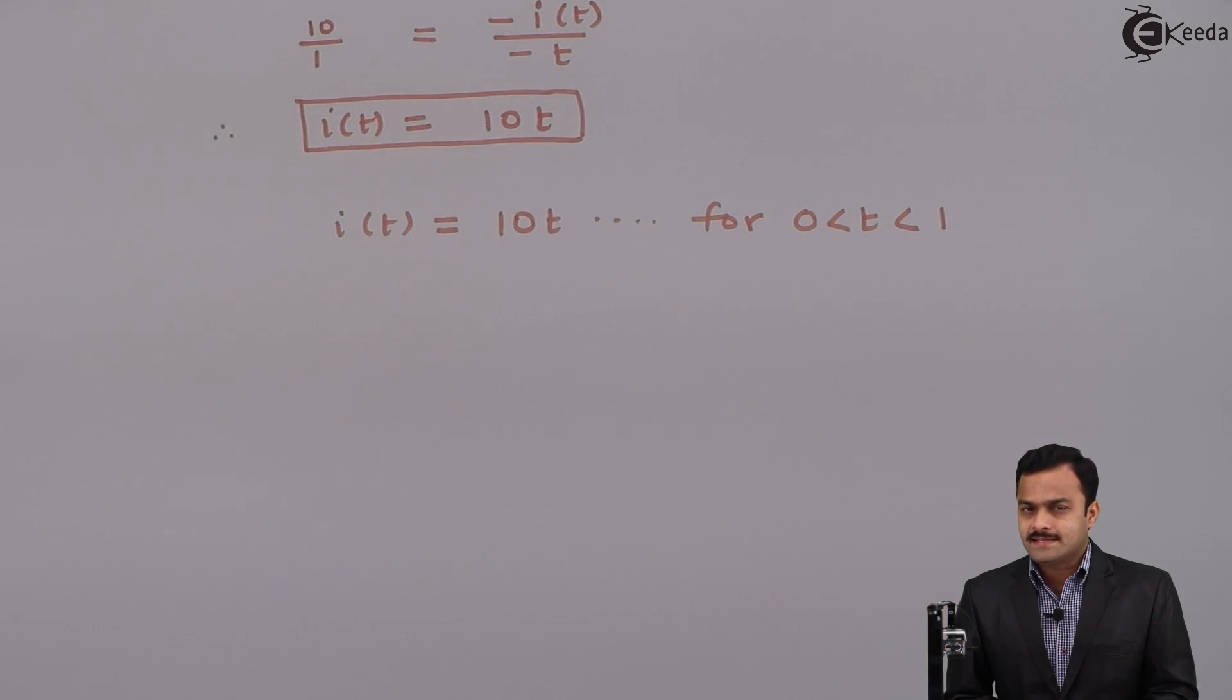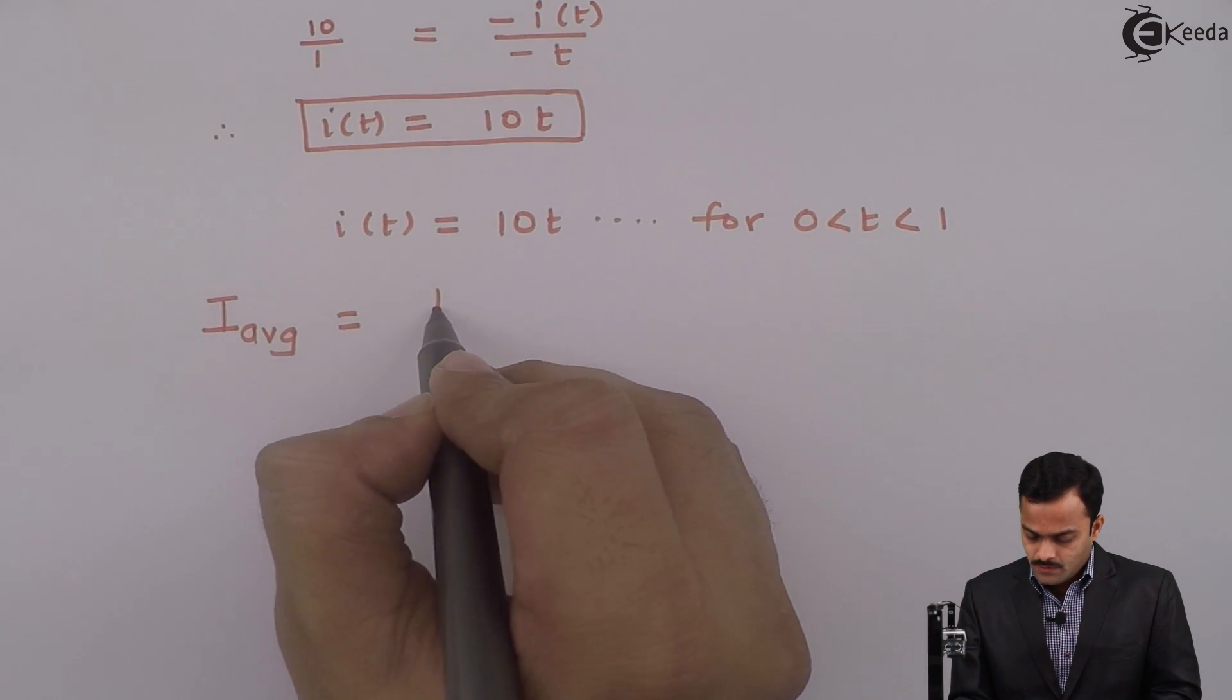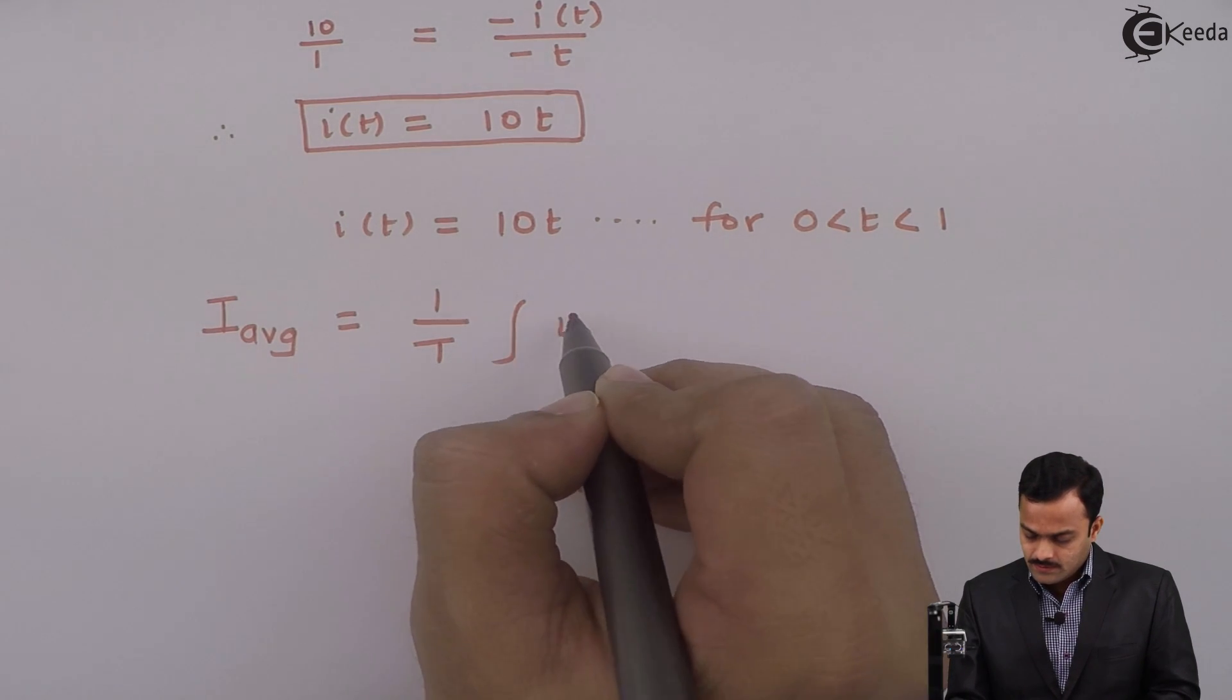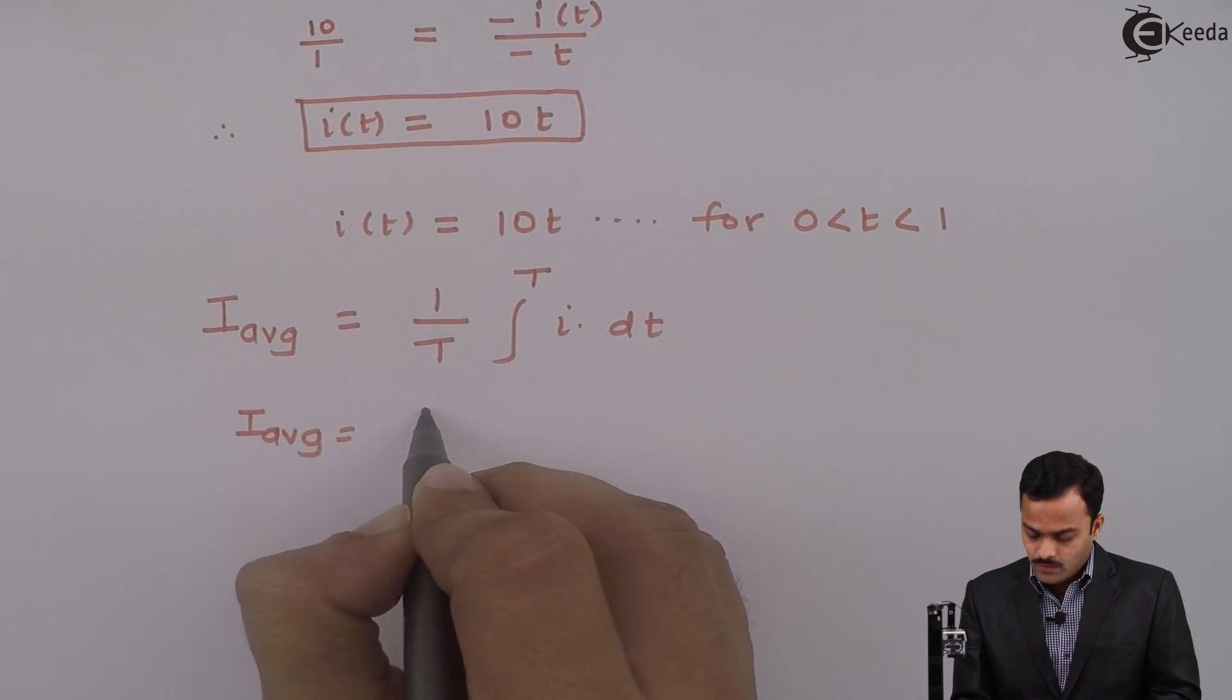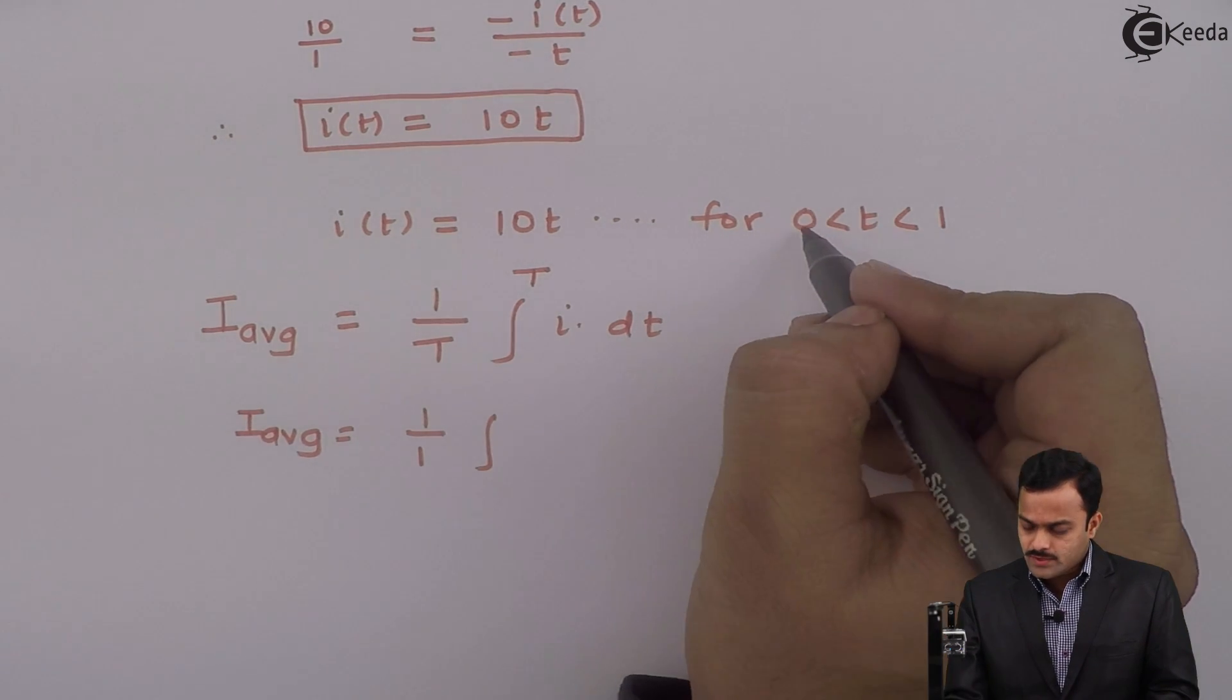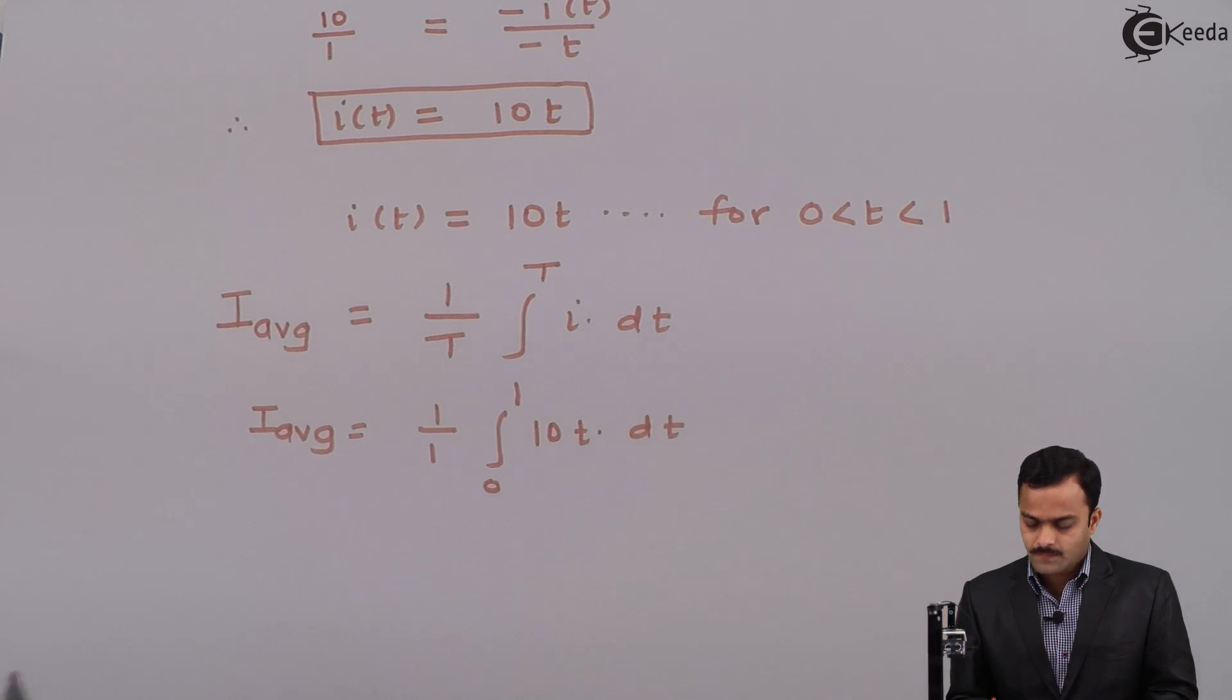We know average value equals 1 upon time period, we have to integrate that particular waveform for the time period T. In this case, 1/1 and I am having a waveform only from 0 to 1, and equation of this i is 10t.